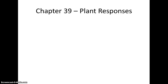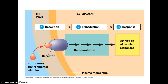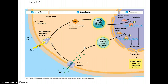Plant responses — just a little bit here. As we talked about in chapter 11, signal transduction pathways apply to plants as well, like all living things. Plants respond to particular things, like light in particular. We'll talk about phytochromes.